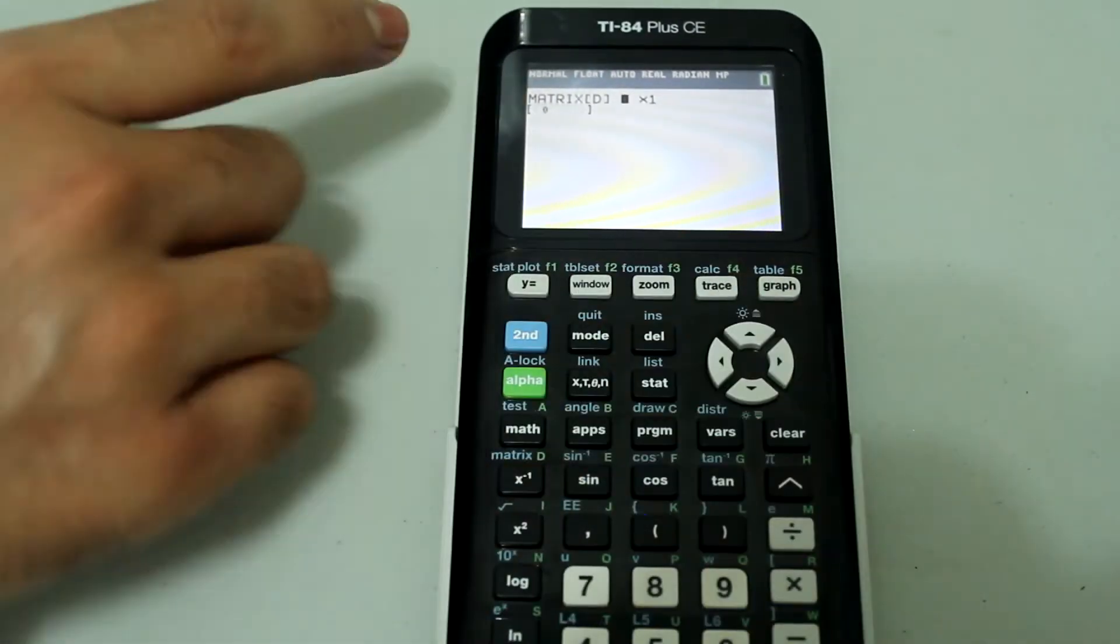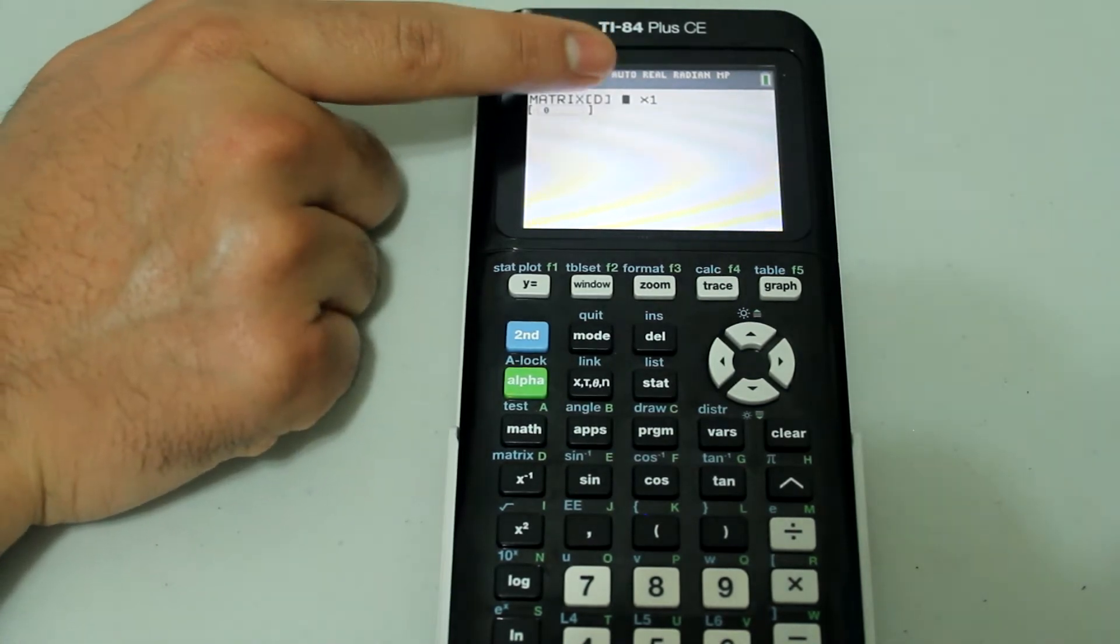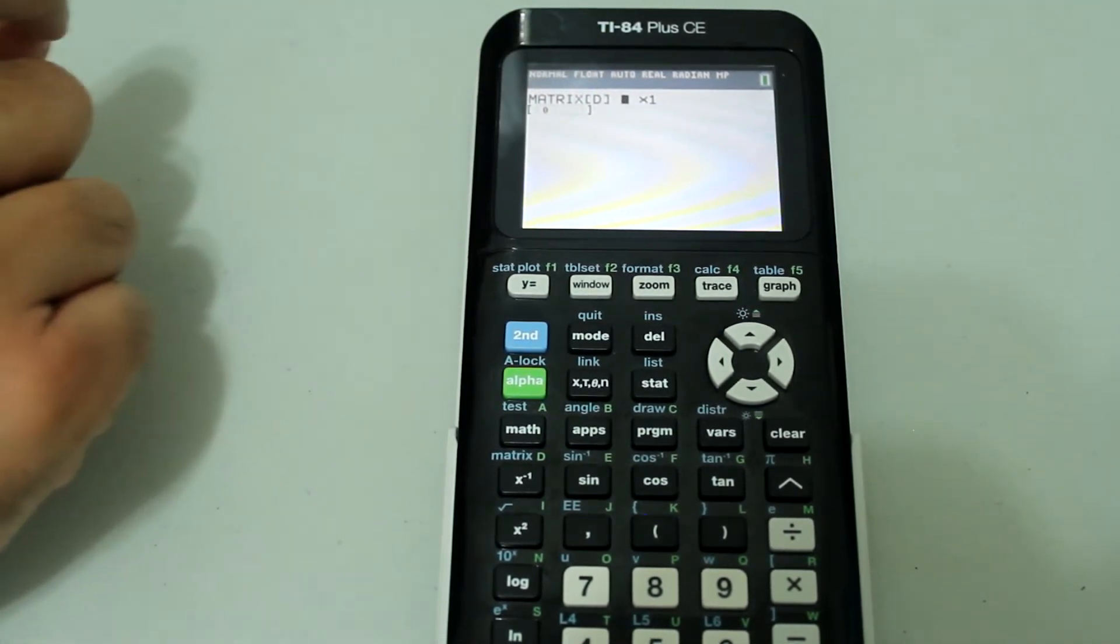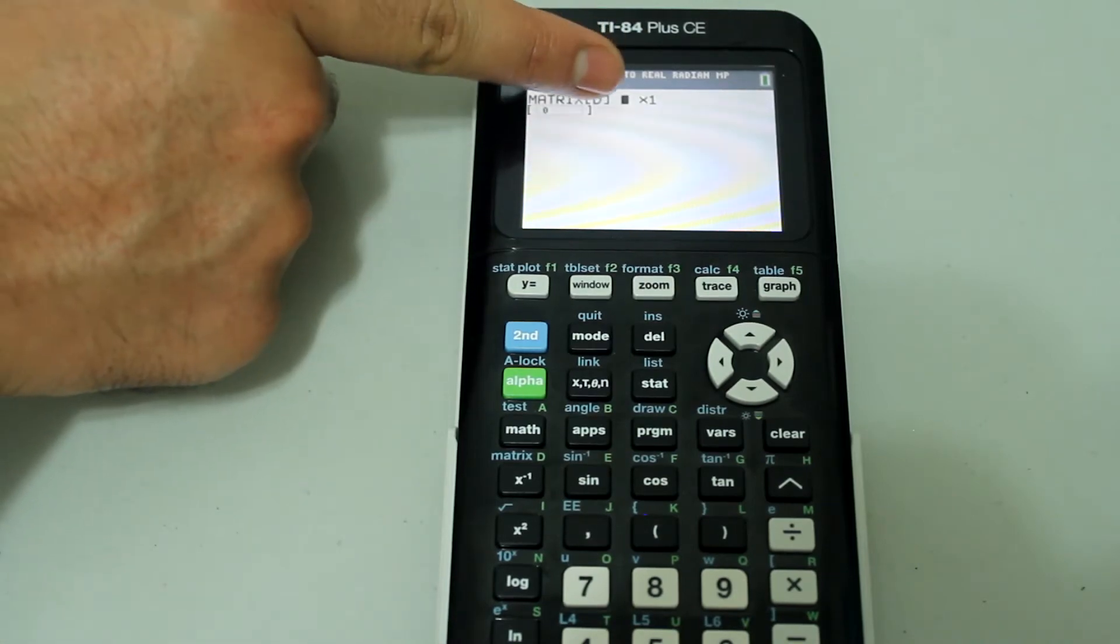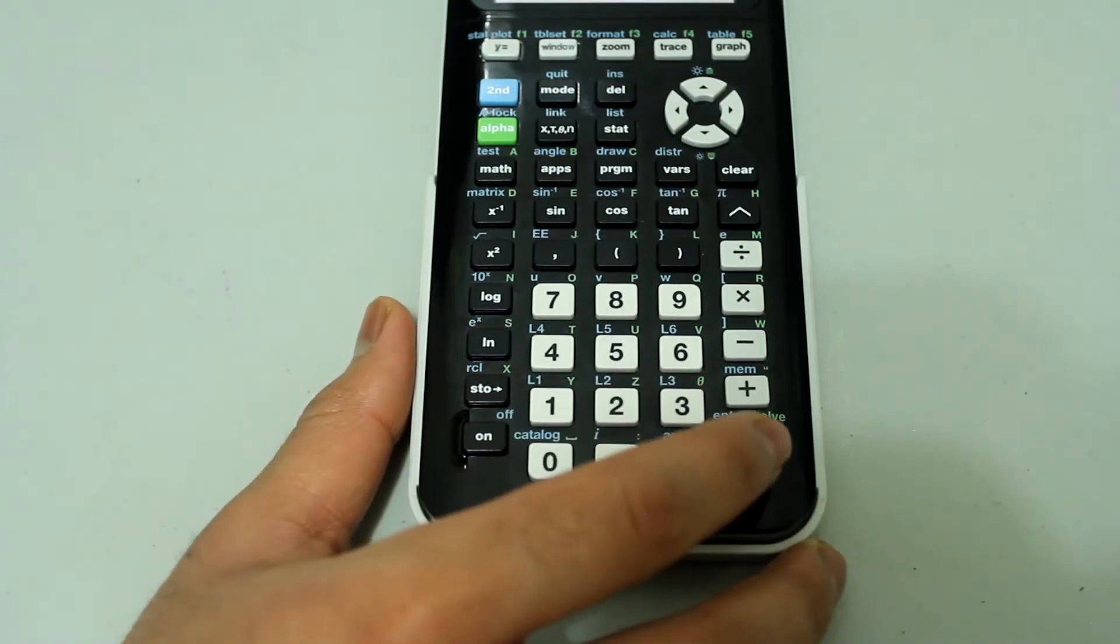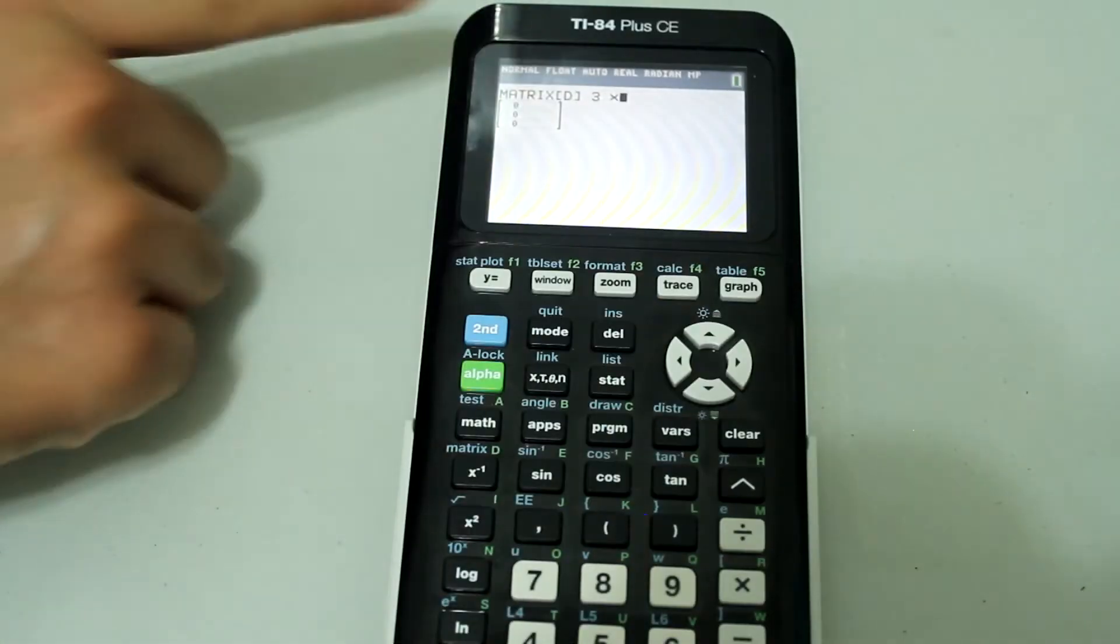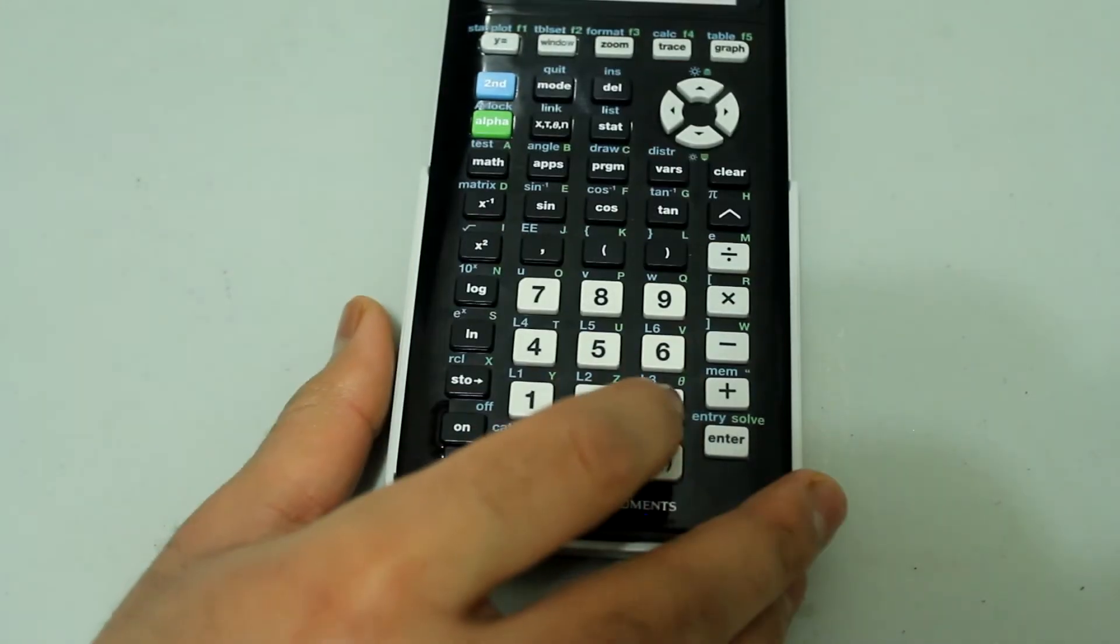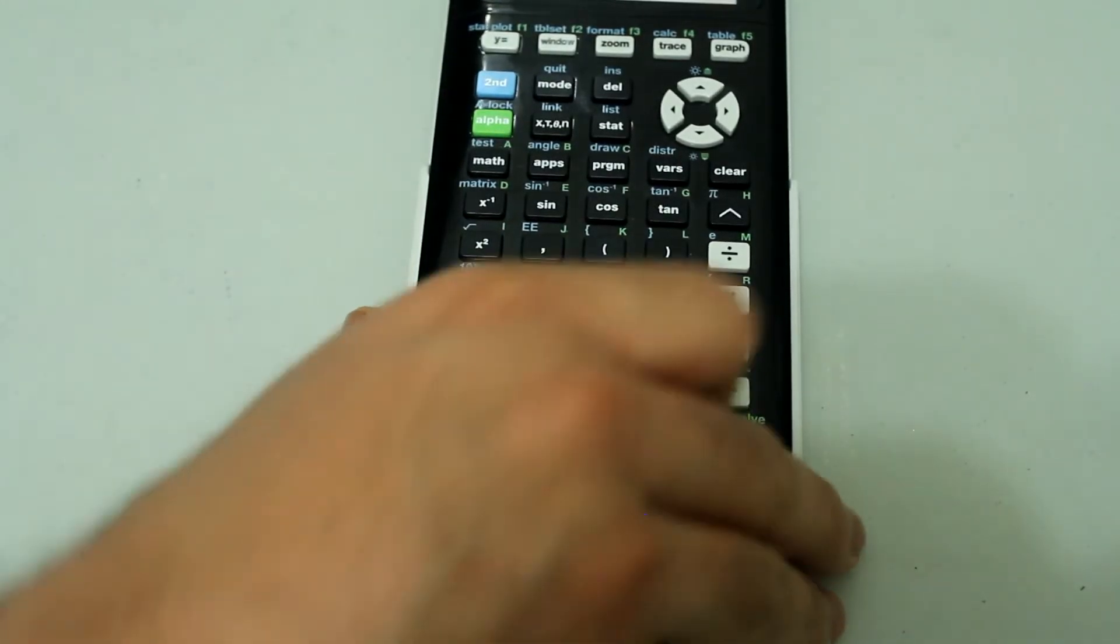Then this comes up and the dimension by default is 1 by 1 and I'm going to change that to a 3 by 3 matrix. So when the cursor is blinking on 1, I'm going to press 3 on the number pad and press enter. Then the cursor is going to be blinking on the second one and I'm going to press 3 on the number pad again and press enter.